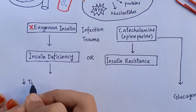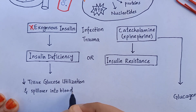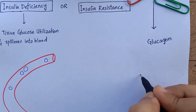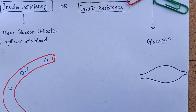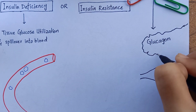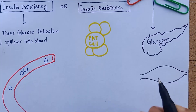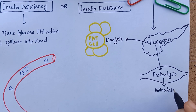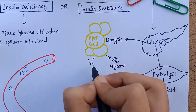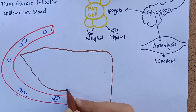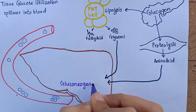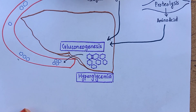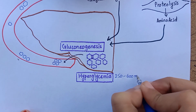Insulin deficiency decreases peripheral utilization of glucose by tissues, which is now accumulating in blood. While at the same time, as the cells are not getting glucose — their main source of energy — the pancreas will secrete glucagon. Glucagon initiates lipolysis in fat cells and proteolysis in muscle cells, and their breakdown products are used by the liver for gluconeogenesis, which further exacerbates hyperglycemia.